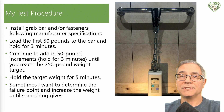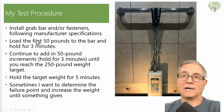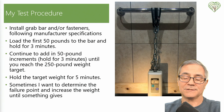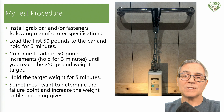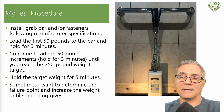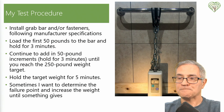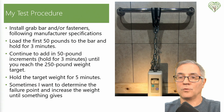Let's talk about what my procedure is. We install the grab bar first, following the manufacturer's specifications for the grab bar and fasteners, depending on how we're doing it. We load the first 50 pounds to the bar and hold for three minutes. We continue to add in 50-pound increments, holding three minutes each time, until we reach the 250-pound target. Then we hold the target weight for five minutes. Sometimes I want to determine the failure point and increase the weight beyond that, because I see manufacturers online claiming their items can hold more than I know they can — and I want to prove one way or the other whether they're telling the truth or have actually tested it.